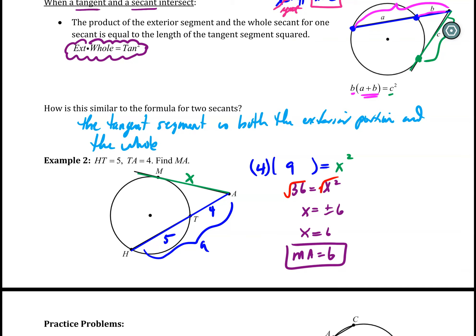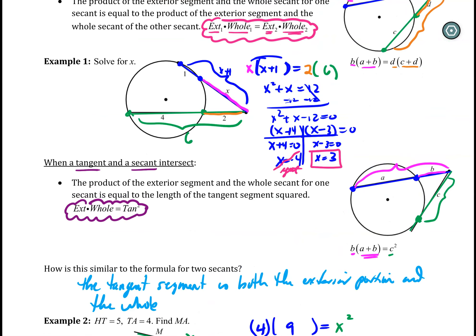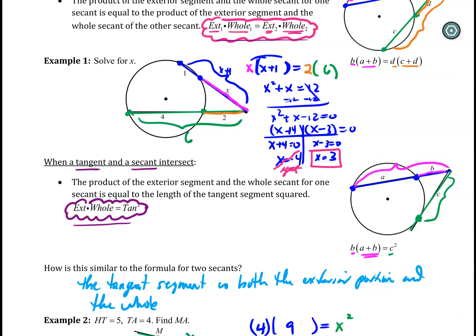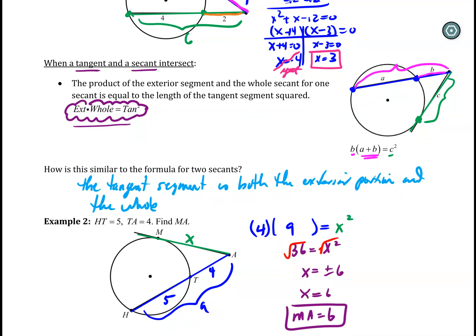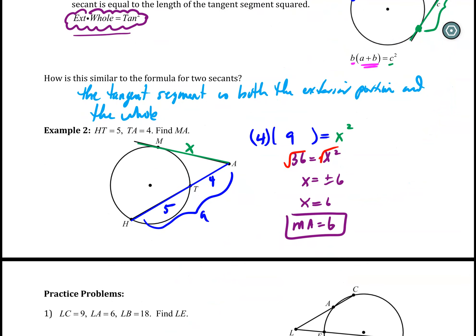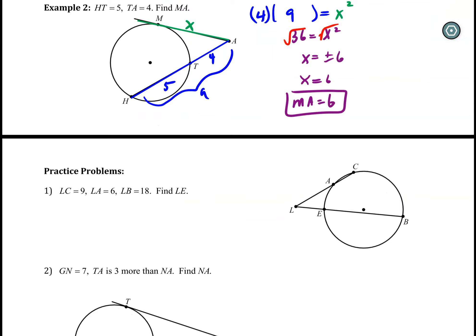Those are the two scenarios you can get with secant lines. Practicing with them, identifying them, and memorizing the formulas is key. Personally, I like having the formulas in word form — exterior times whole — because it's easier to interpret and makes memorizing much easier.